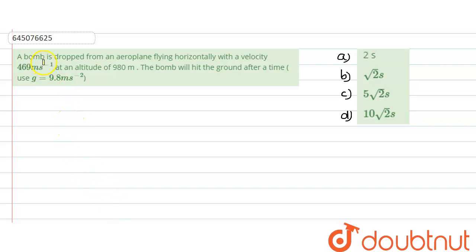In this question, what is given is that there is a bomb which is dropped from an aeroplane flying horizontally with a velocity of 469 meter per second at an altitude of 980 meters. The bomb will hit the ground after a time — we need to take g as 9.8 meter per second square. Let's say this is our ground.